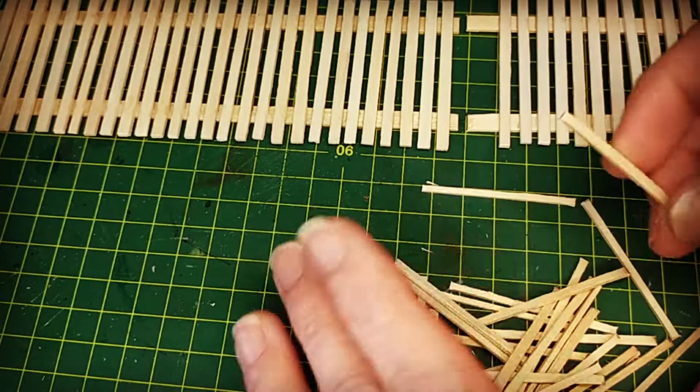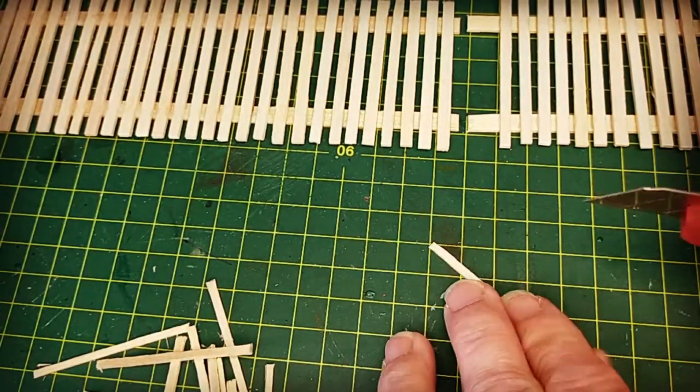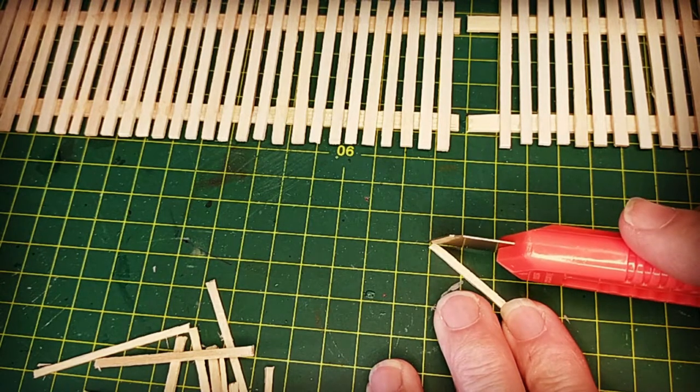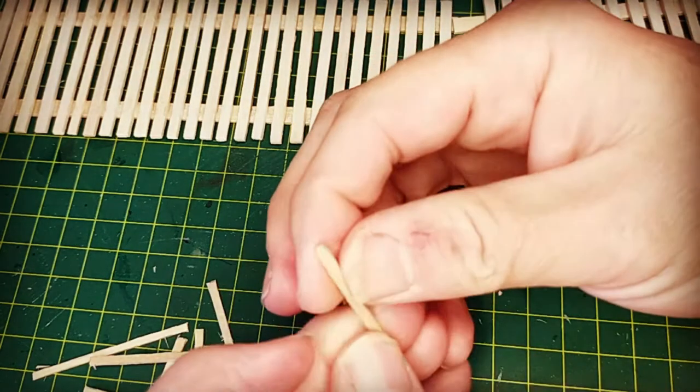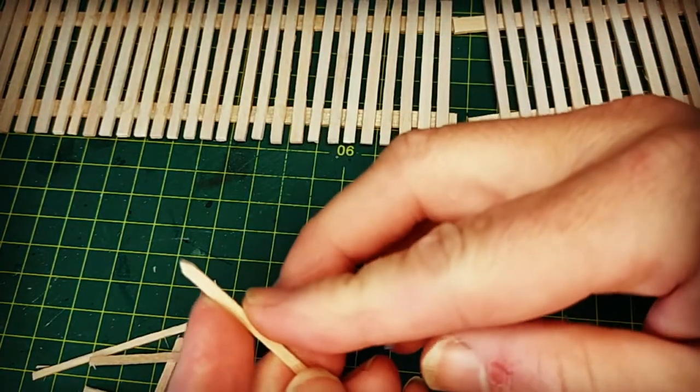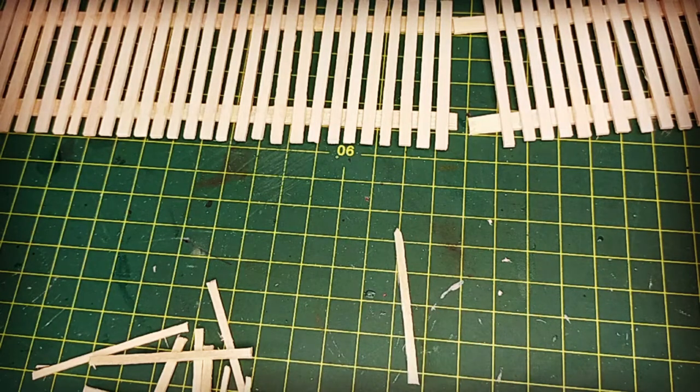I used matchsticks for the picket fence because again I would prefer to use anything but balsa wood because it's so fragile. I just cut a point under the tip of each one of these and I made a smaller jig out of nothing but toothpicks to mark in between.